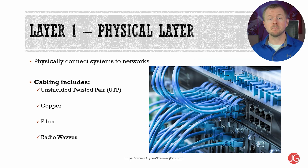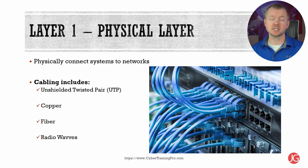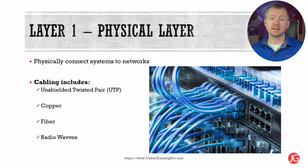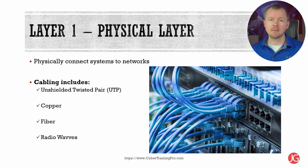Layer one. At the basic level of networks, if we have a computer, we need to plug some kind of cable into it, which we call an unshielded twisted pair or UTP, from our computer to a network jack or directly into a device like a router that you have at your house. We can also use other types of cabling like copper, fiber optics, or radio waves like Wi-Fi.